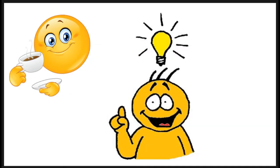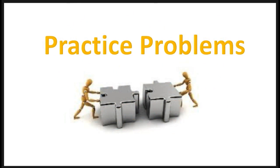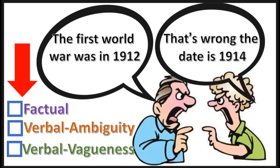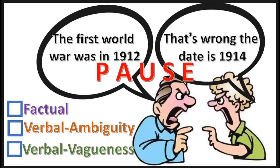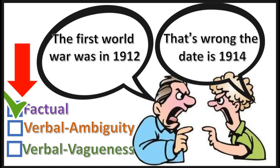Now that you understand the basic concept, let's lock in the new neural pathway by doing some practice problems. Practice problem number one — select what type of dispute this is. Press pause, and then press play to see if you're correct. That's right — it's a factual dispute over the date of World War I.